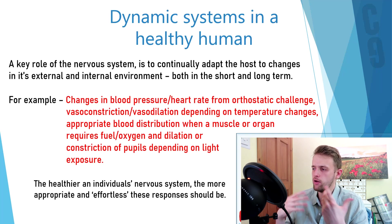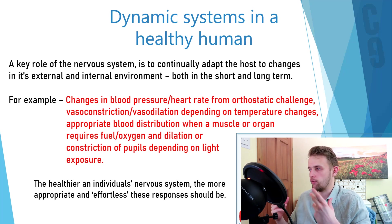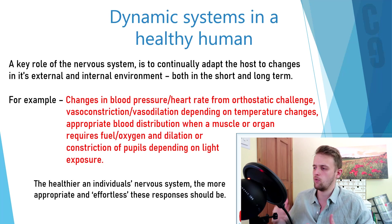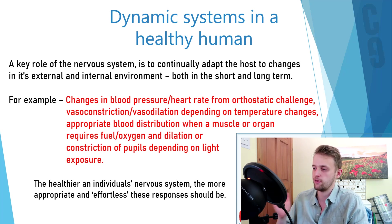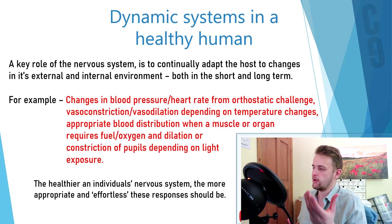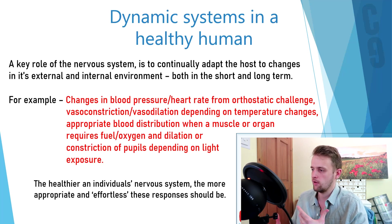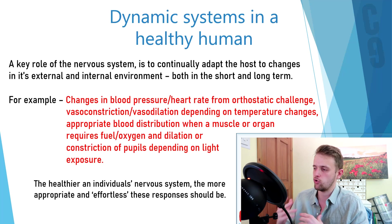One of the key roles of our nervous system is to continually adapt us — the host — to changes in our external and internal environments, both in the short and long term. For example: changes in blood pressure or heart rate from an orthostatic challenge (standing upright), vasoconstriction or vasodilation depending on temperature changes, appropriate blood distribution when a muscle or organ requires fuel or oxygen, and dilation or constriction of pupils depending on light exposure. The healthier an individual's nervous system is, the more effortless, well-timed, and accurate these responses should be.